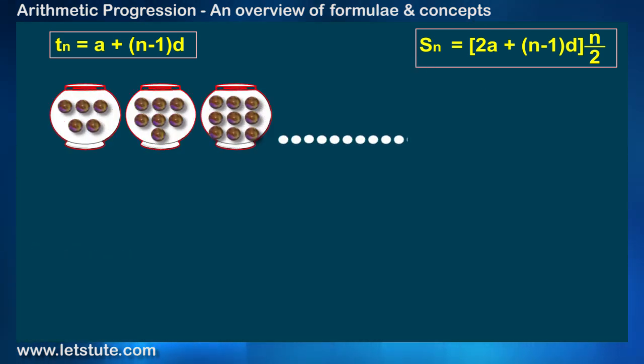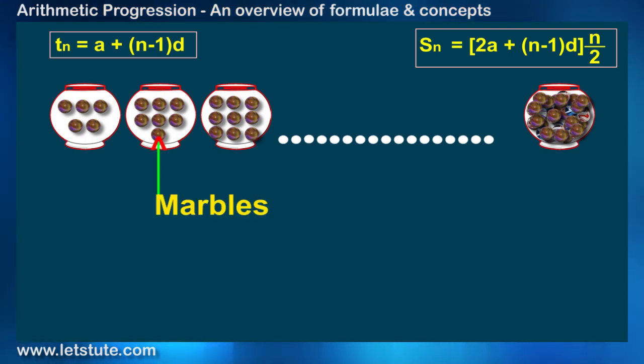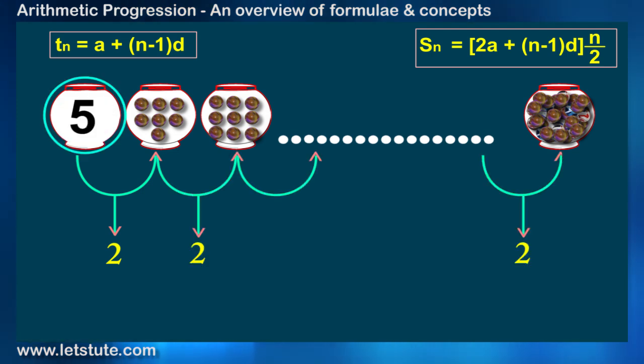Look at this arrangement of pots. In each pot, there are some marbles put in the order of arithmetic progression, starting from 5 marbles in the first pot. Now I will try to relate it with our formulae.